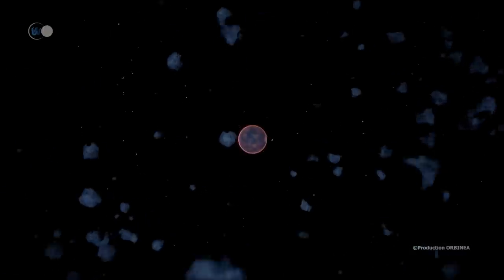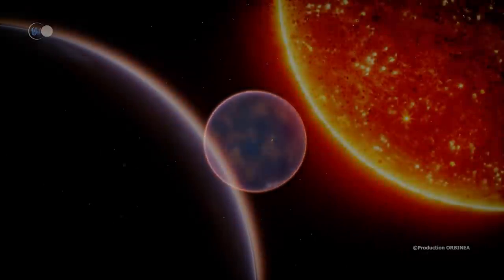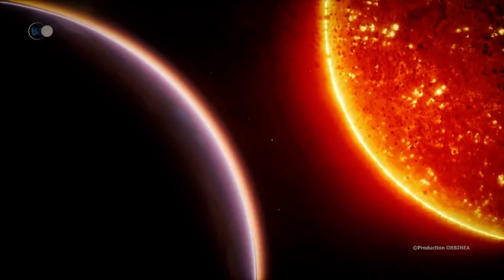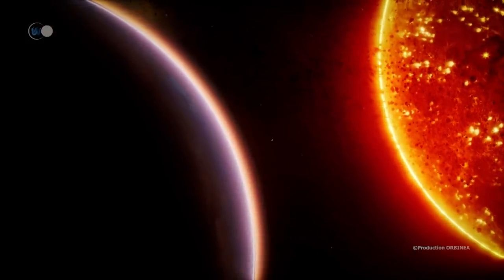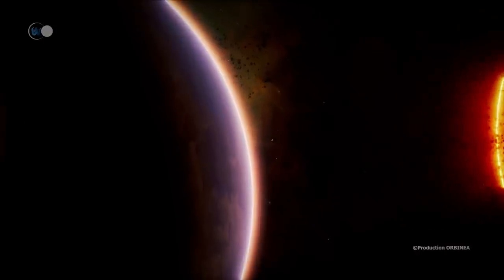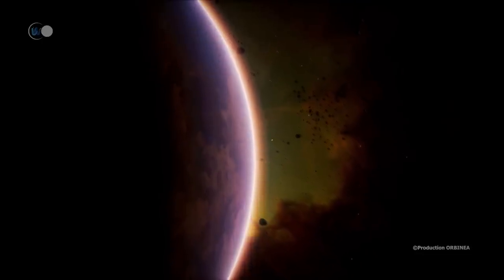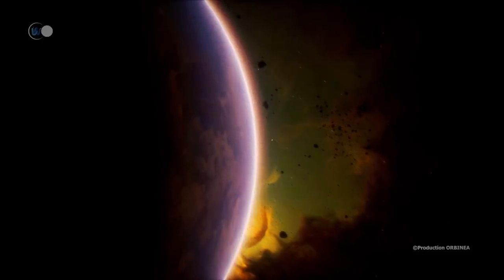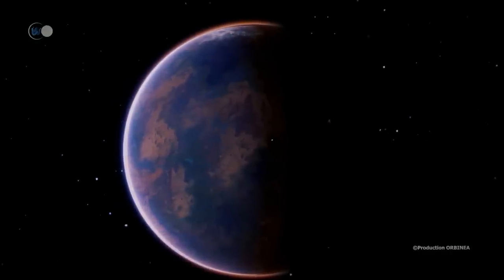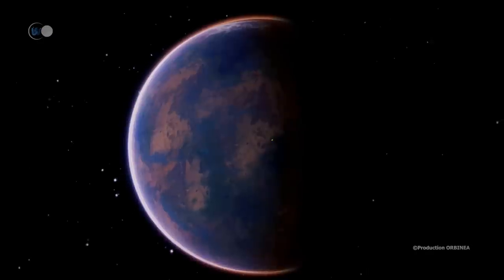Slightly more massive than Proxima Centauri b, Ross 128 b contains at least 1.35 times the mass of the Earth. According to its hypothetical composition, if it is composed only of pure iron, it could have a diameter equivalent to half that of our Earth. According to the opposite hypothesis, if it is only composed of hydrogen and helium, it could then measure three times the size of the Earth. But considering that this planet could be telluric, its radius could be 1.1 times the Earth's radius, or about 7,000 kilometers or 4,350 miles, and its mass would then be 35% more massive than that of the Earth.